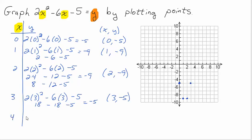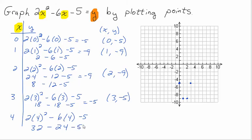Let's try four. Two times four squared minus six times four minus five. Four squared is sixteen, times two is thirty-two. Six times four is twenty-four. Thirty-two take away twenty-four is eight, take away five is three. So that gives me the point four comma three — over four, up three.